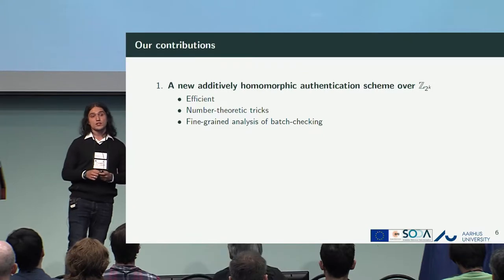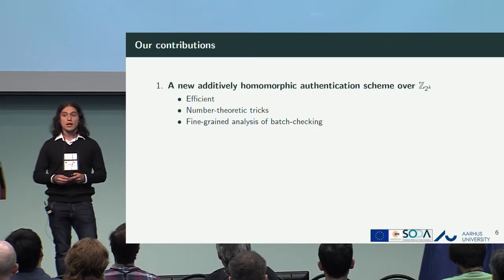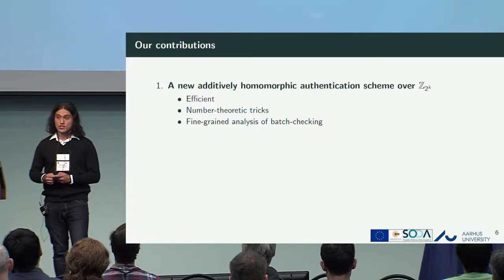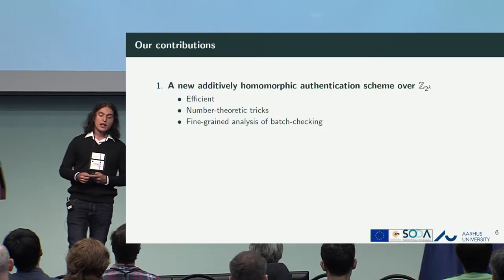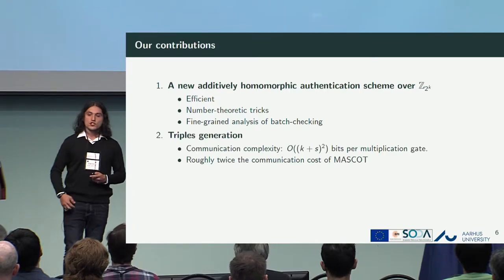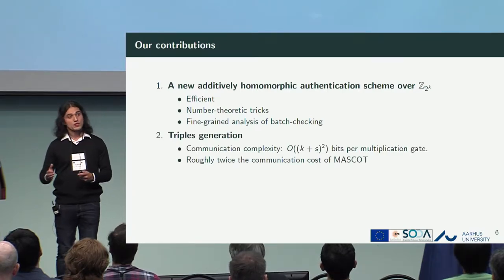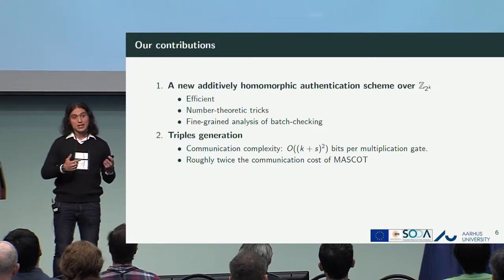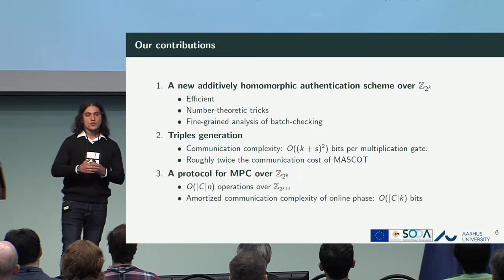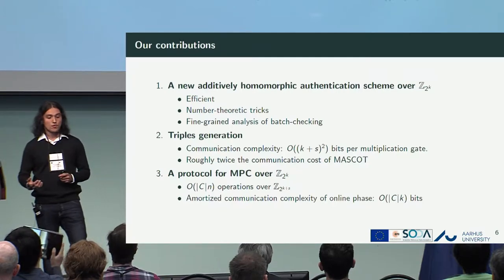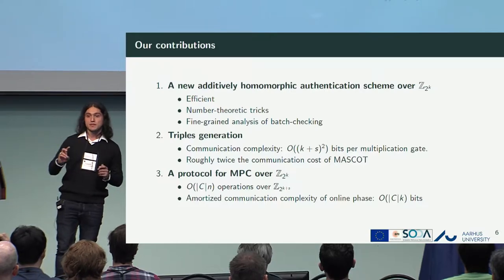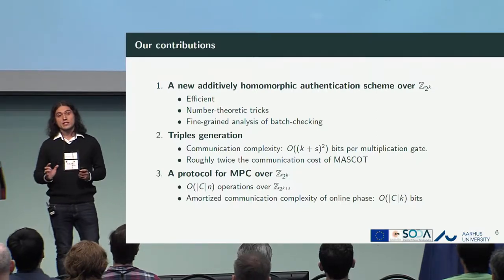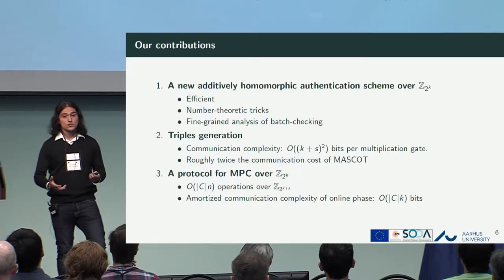What do we achieve in this work? We developed a new additively homomorphic authentication scheme over this ring. The solution is actually very simple when it comes to number theoretic tricks — we use very elementary number theory, and it's also quite efficient. We also perform a fine-grained analysis of the batch MAC checking. We show how to generate multiplication triples; our computation is in the preprocessing model, so we need triples to handle multiplication gates. Generating those involves roughly twice the communication of MASCOT. With these tools, we develop a protocol for dishonest majority MPC over this ring. Our protocol is quite efficient — it involves asymptotically the same operations as computing the circuit in the clear, and it's expected to be efficient because we do computations modulo 2^32 or 2^64.